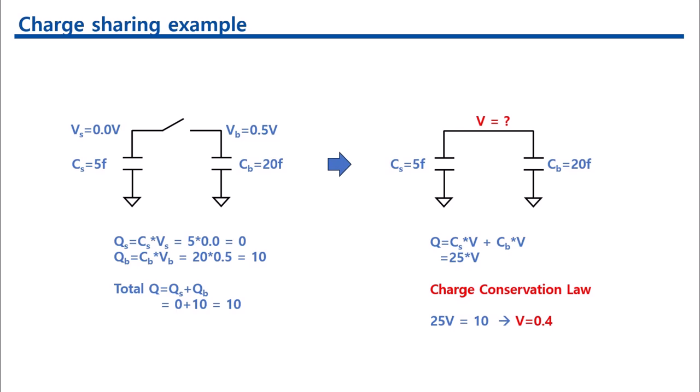We have another example. We still have the same capacitance for Cs and Cb. But now, the voltage level of Cs is 0 volt, while the voltage level of Cb is 0.5 volt. Then, the final voltage level will be 0.4 volt.